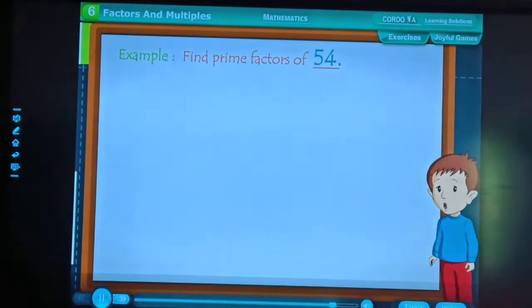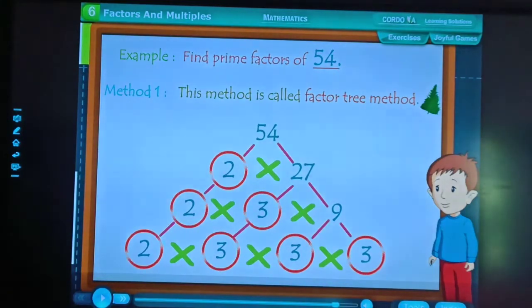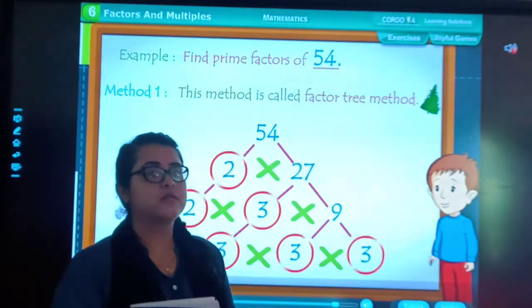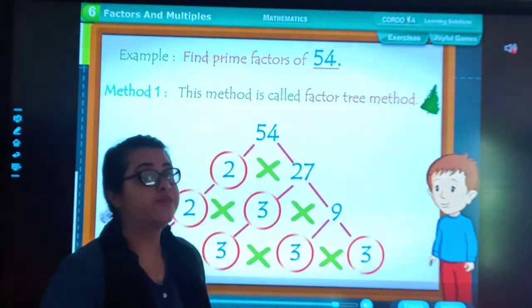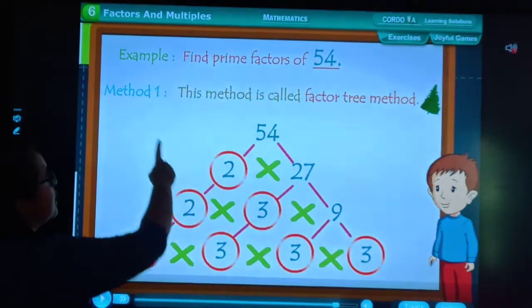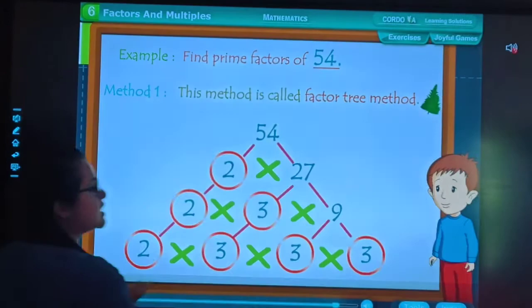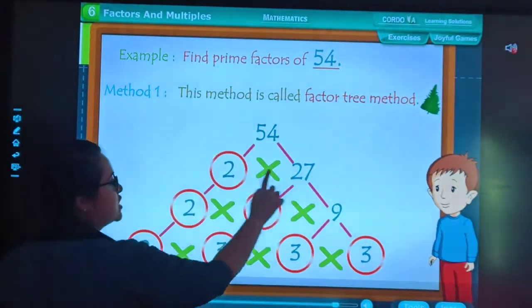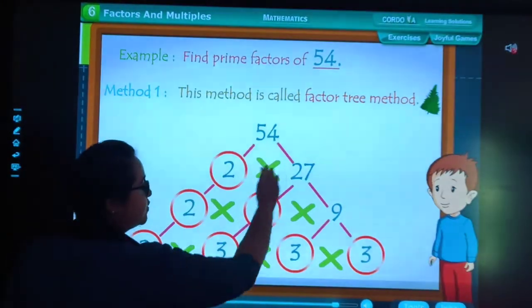Example: Find prime factors of 54. Method 1. There are 3 methods to calculate the prime factorization. The first method is known as factor tree method. You can observe, 54 can be split here: 2, 27.